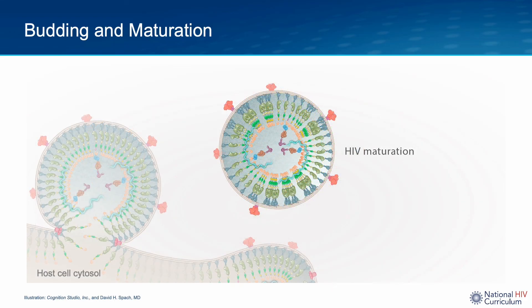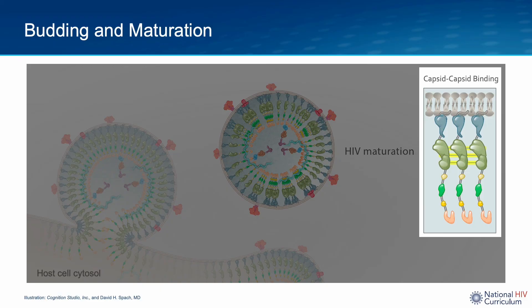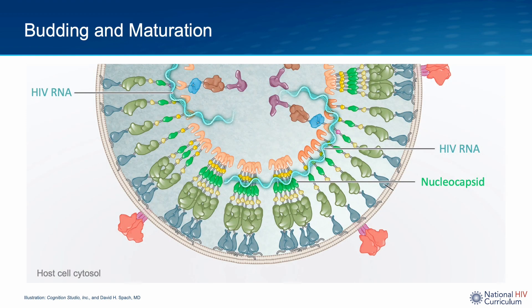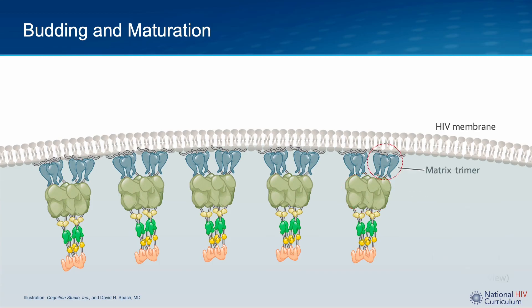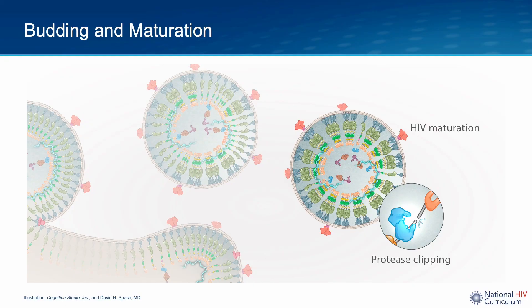As the immature virion fully separates from the host cell, the lipid membrane in the newly forming HIV particle has been acquired from the host membrane. The HIV maturation phase begins with the clustering of GAG polyproteins, largely driven by lateral binding between capsid proteins. The two strands of genomic HIV RNA are located toward the center of the immature virion, tightly aligned with the nucleocapsid protein. More extensive capsid-capsid binding leads to the formation of capsid hexamers. Occasional capsid pentamers are also formed. Along with capsid clustering, the matrix proteins group as trimers. At this stage, the HIV protease enzyme is autocleaved from the GAG-POL polyprotein.